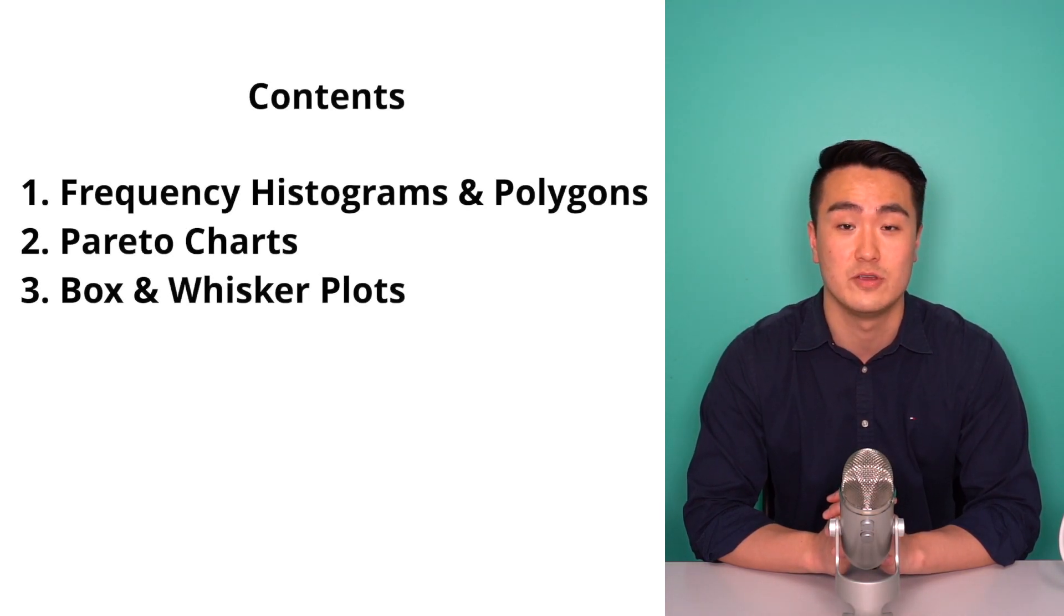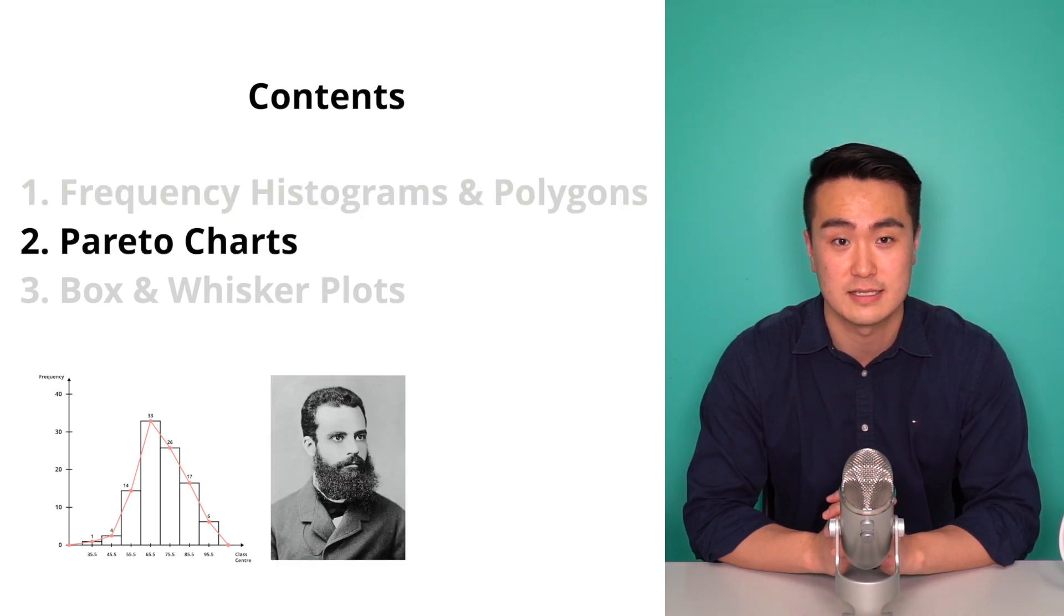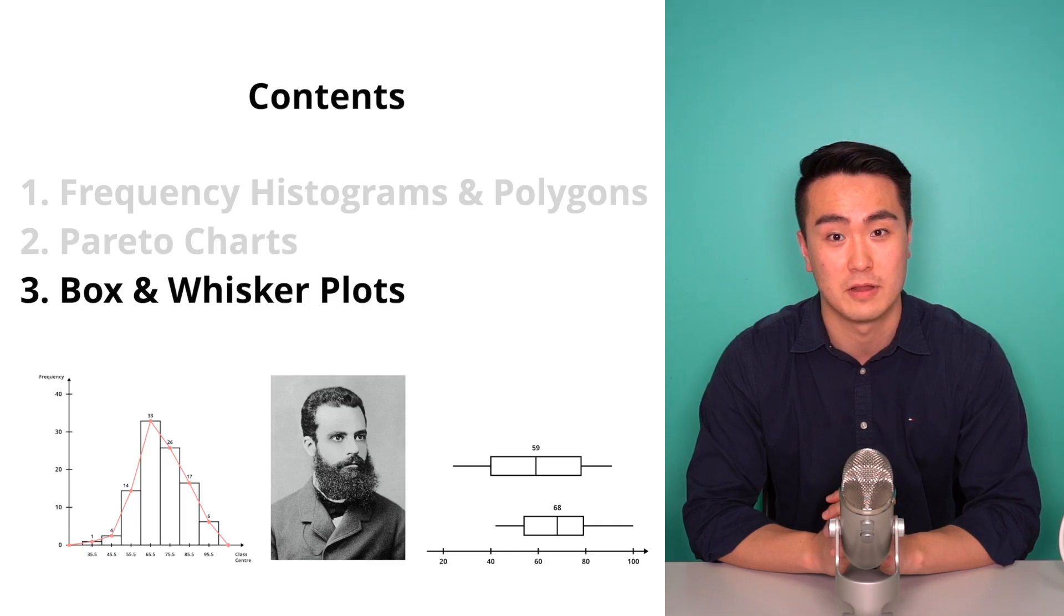So in this episode, other than the standard bar charts, column charts, pie charts we learnt when we were younger, we will be discussing the three specific types of univariate data charts. Number one, frequency histograms and polygons. Number two, Pareto charts and number three, box and whisker plots.